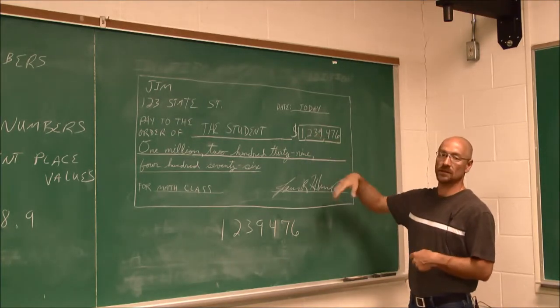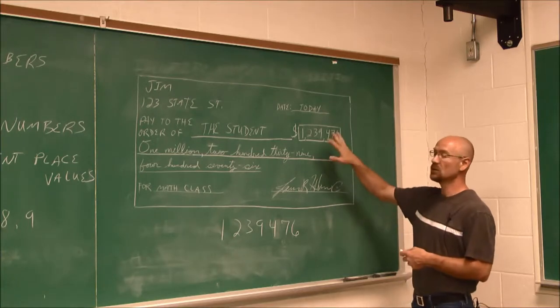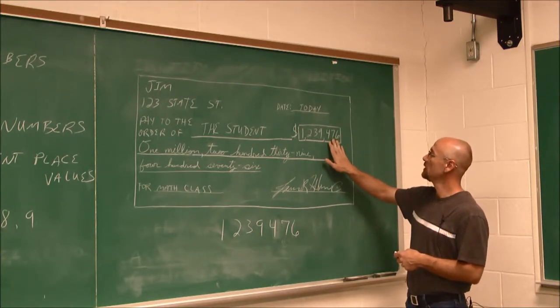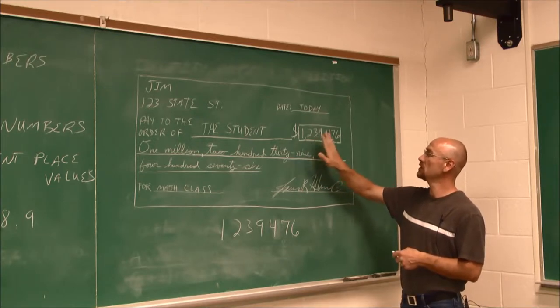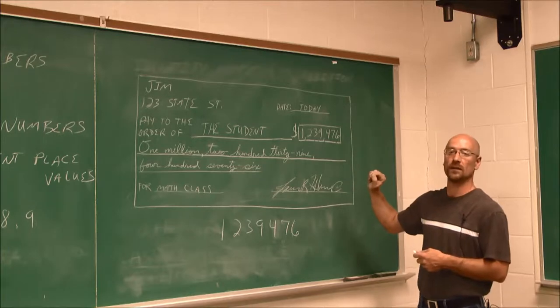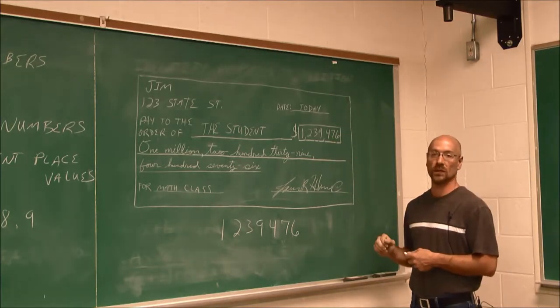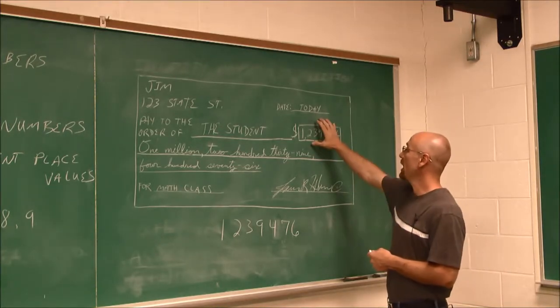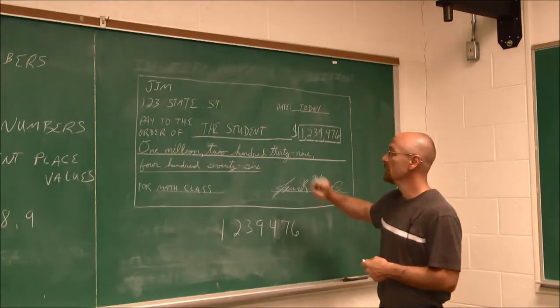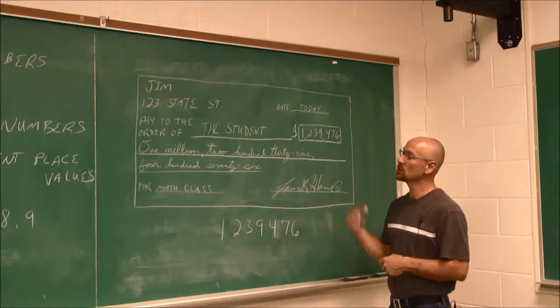Now, each three digits is defined as a period. It's good to know the terminology, but don't focus too much on it. So each three digits is a period. We use a comma to separate it, so it's easier to define the number, what place values we have. So we have the number in standard form. When we write a check, we also have to put it in to English language to write it out.